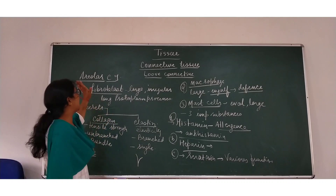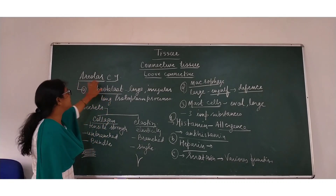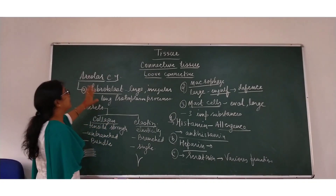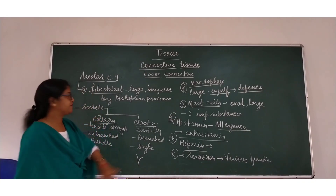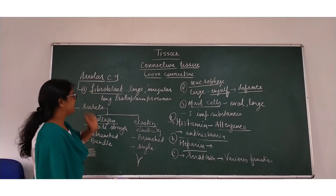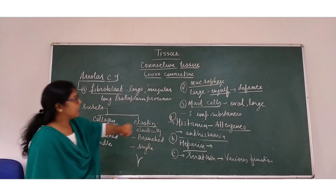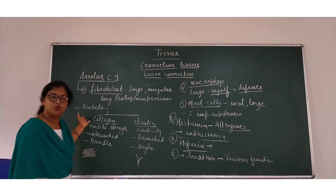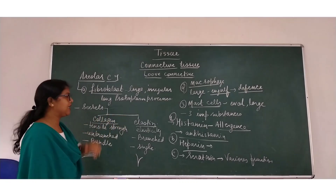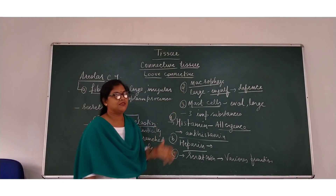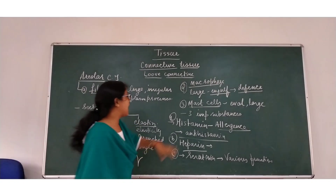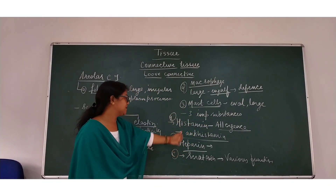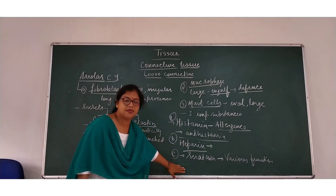So to summarize: areolar connective tissues are widely distributed and contain three types of cells — fibroblast, macrophage, and mast cells. Fibroblast secretes two types of protein: collagen and elastin. Macrophage provides the defense mechanism. Mast cells produce three important substances: histamine, heparin, and serotonin.